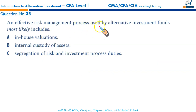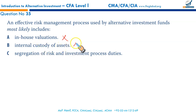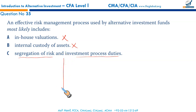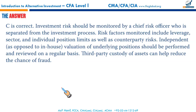An effective risk management process used by alternative investment funds most likely includes: in-house valuation — incorrect; independent valuations of underlying positions should be performed. Internal custody of assets — incorrect; third-party custody of assets is recommended to reduce the chance of fraud. Therefore it must be C: segregation of risk and investment process duties. Investment risk monitoring should be done by an independent chief risk officer, separate from the investment process. There must be segregation between these two roles. That makes C the correct option, and it ends your Introduction to Alternative Investment.